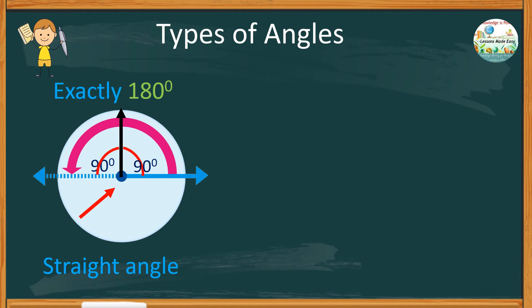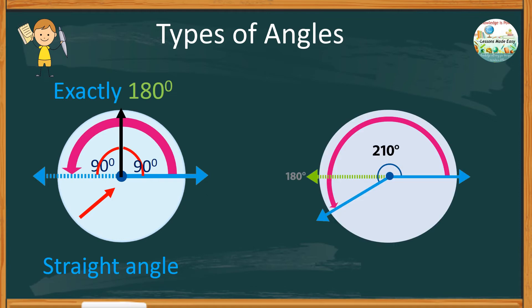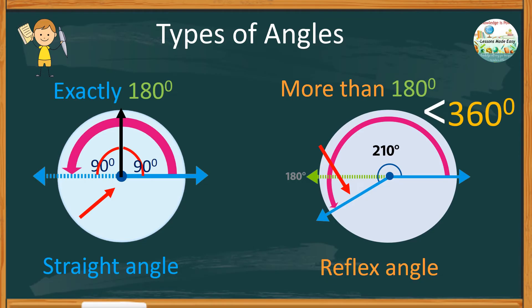Study this other angle. One side of this angle bends outwards, creating a much bigger corner. We call this a reflex angle. This type of angle has a measurement of more than 180 degrees, but less than 360 degrees.